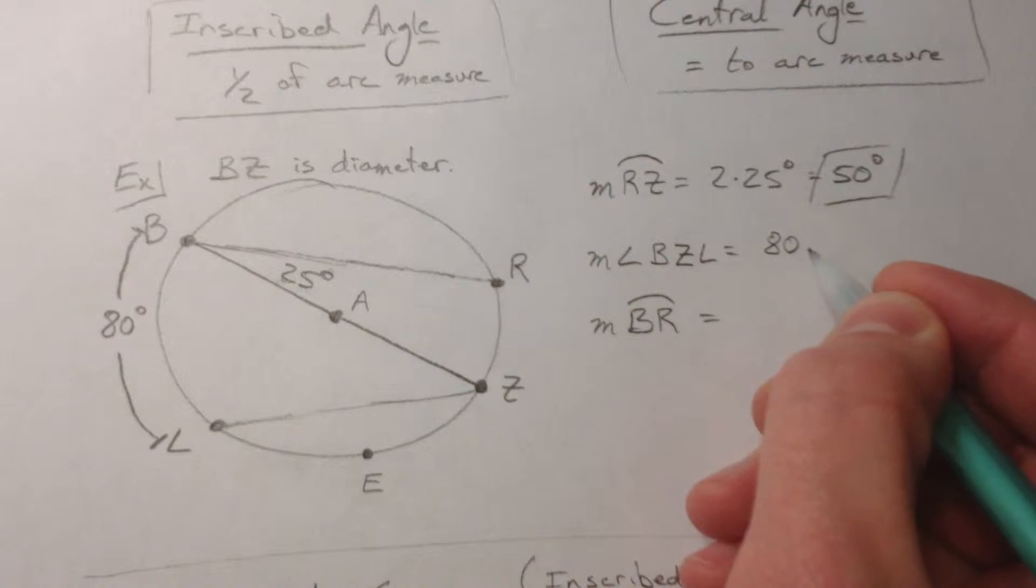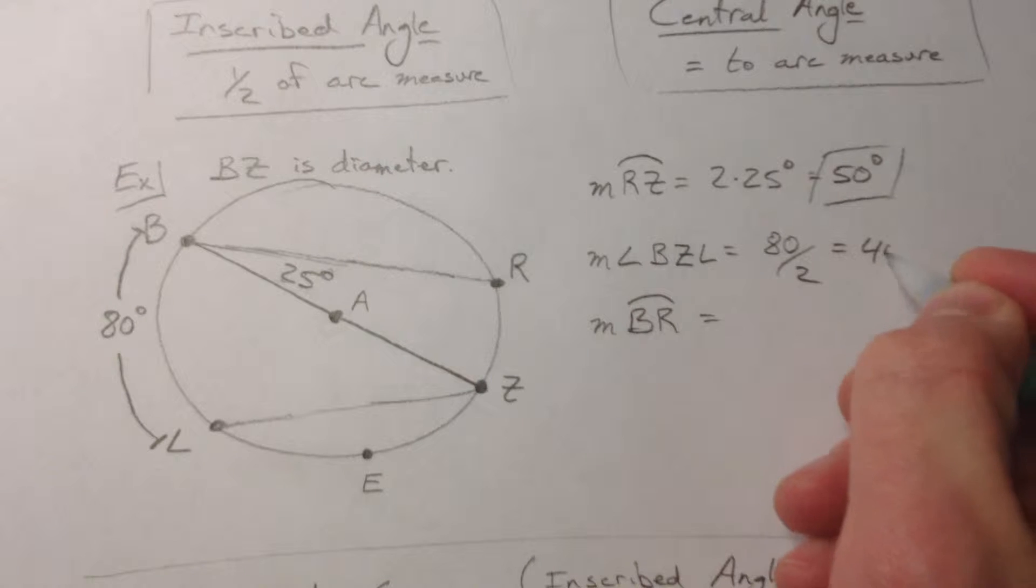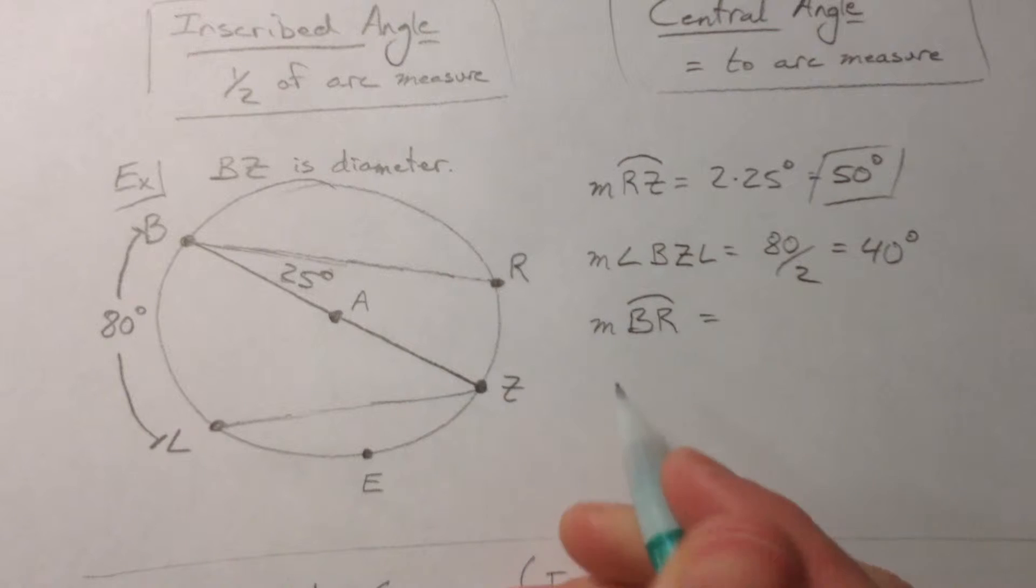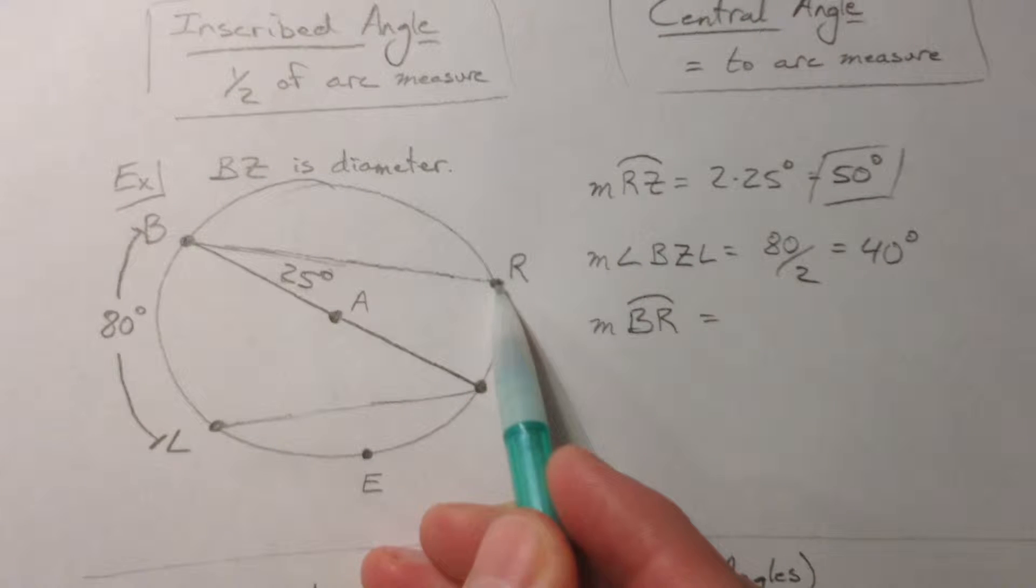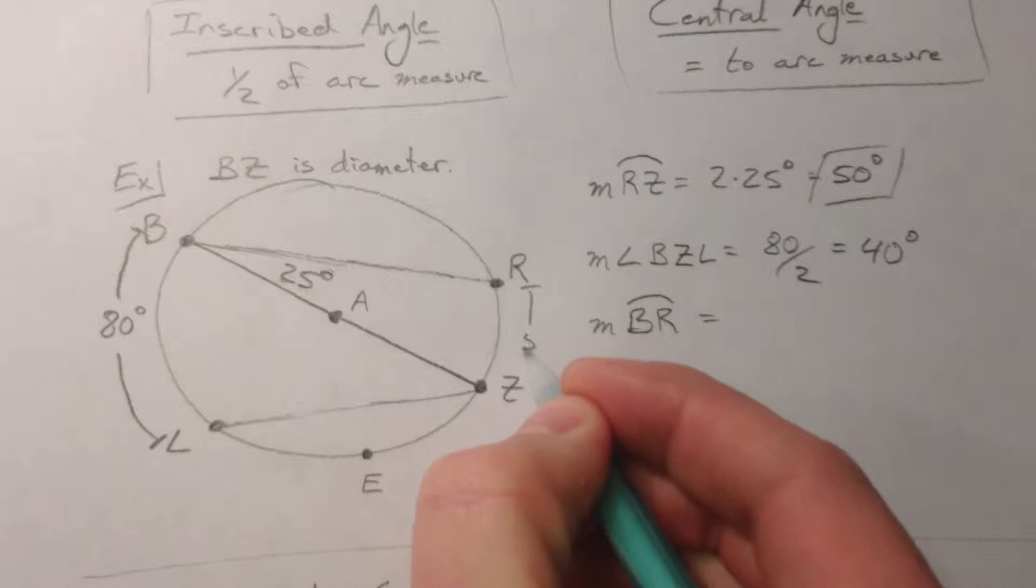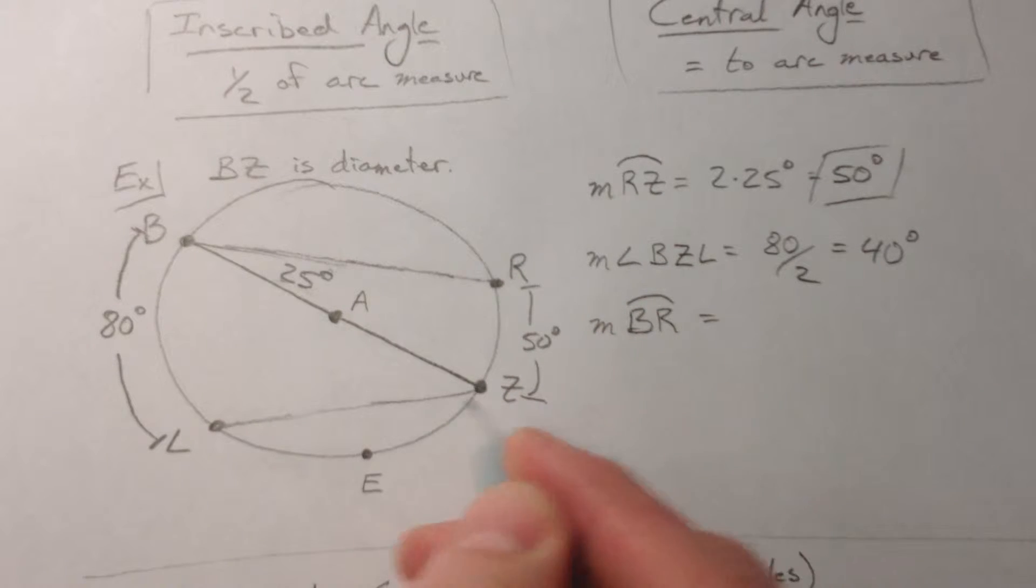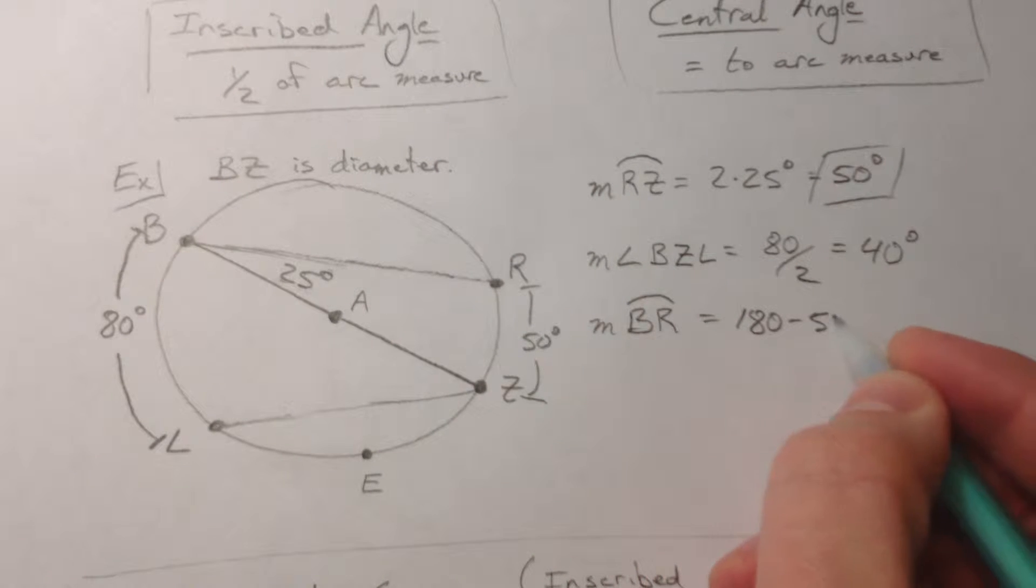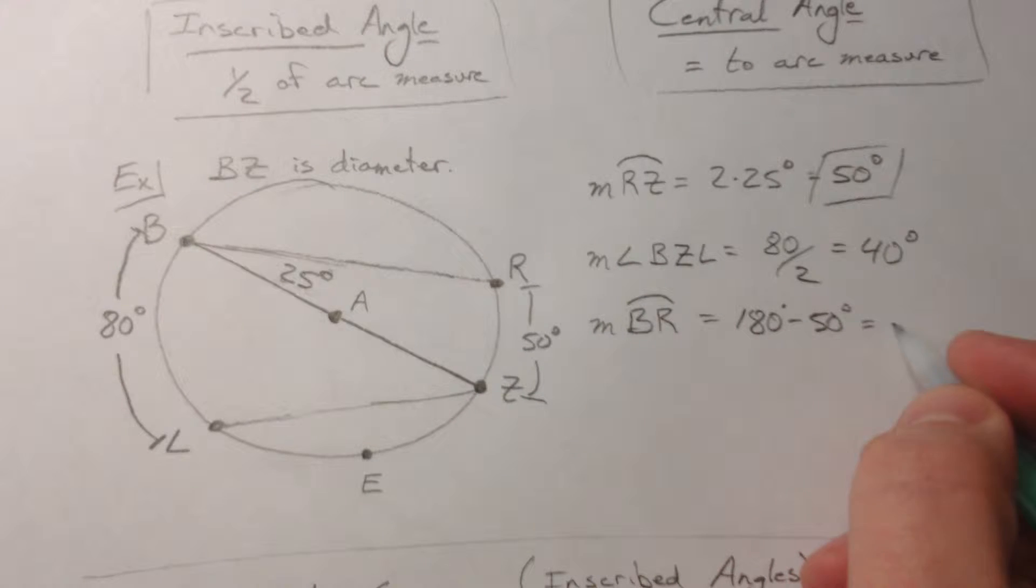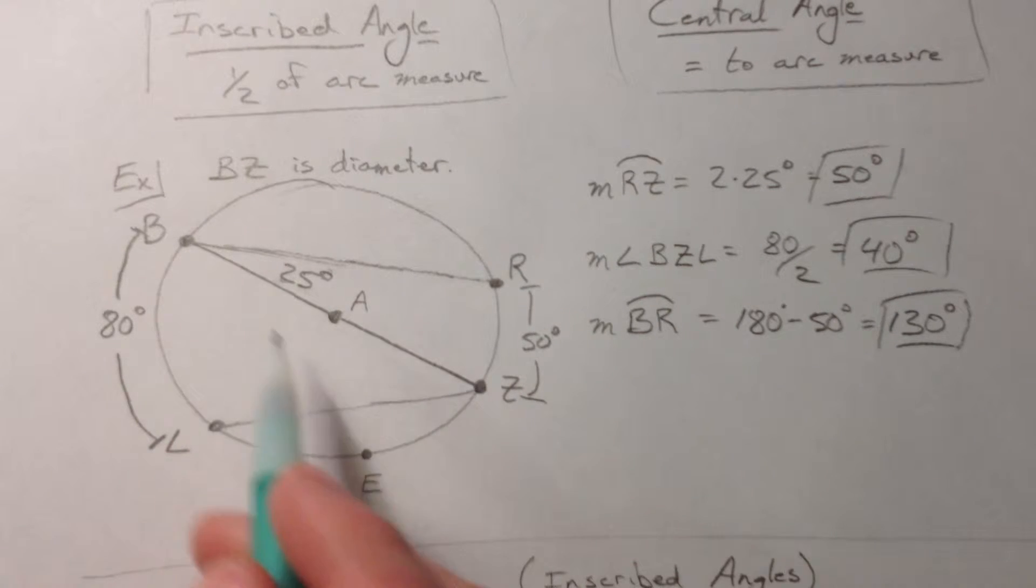to find the inscribed angle. And then we have to find measure of arc BR. BR and RZ, which we found RZ was 50, and so if RZ is 50 we can do 180 minus the 50 to come up with 130 degrees for the arc BR. Again it's 180 because it's a diameter and so half of the circle is 180 degrees.